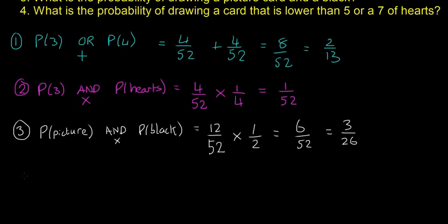I'll scroll down for the last one. What is the probability of drawing a card that is lower than 5 or a 7 of hearts? This one will take just a little bit longer. So I'll say P of less than 5, so that's the less than symbol, OR, which is add, P of 7 of hearts.